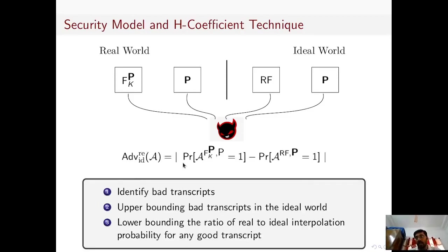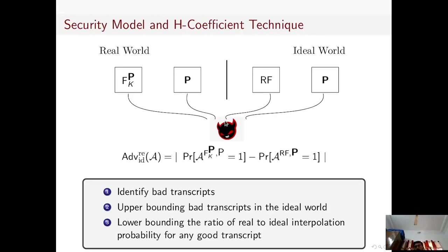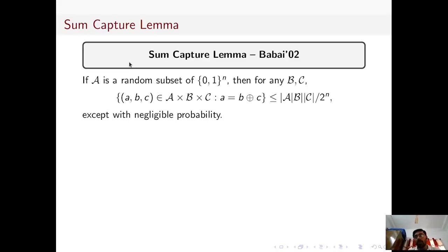To upper-bound the advantage of adversary A using the H-coefficient technique, we need to do three things: first, identify bad transcripts; second, upper-bound the probability of bad transcripts in the ideal world; and third, for any good transcript, lower-bound the ratio of the real to ideal interpolation probability. A transcript is a summary of the interaction between the adversary and the oracle. To prove the security of our construction, we also require a sum-capture lemma. The original sum-capture lemma, proposed by Babai, roughly says that if A is a random subset of {0,1}^n, then for any subsets B and C of {0,1}^n, the cardinality of triplets (a, b, c) with a = b + c is at most |A|·|B|·|C| / 2^n, which is very small.